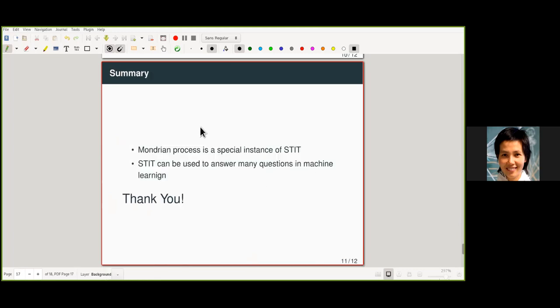Okay. So in summary, Mondrian process arise in machine learning. It's a special case of STIT and we very much hope that there will be more development at the intersection of stochastic geometry and machine learning. Thank you.